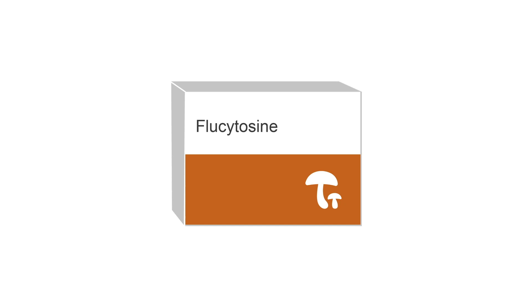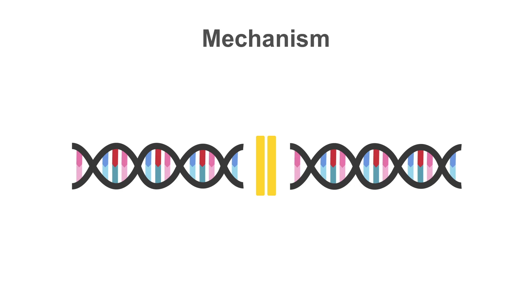Fungi that are susceptible to flucytosine, or 5-fluorocytosine, possess two enzymes: one which allows the drug to enter the cell, and the other which converts the drug to 5-fluorouracil, an anti-cancer drug, which acts on fungal nucleic acids as a chain terminator, killing the organism.